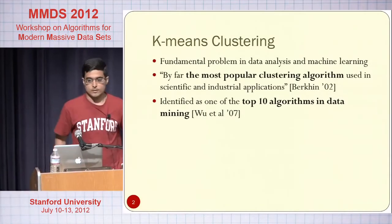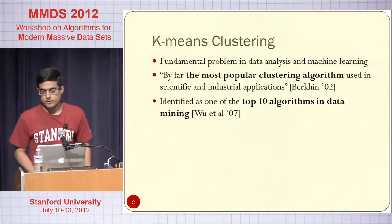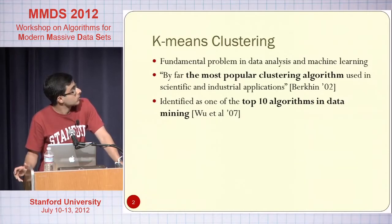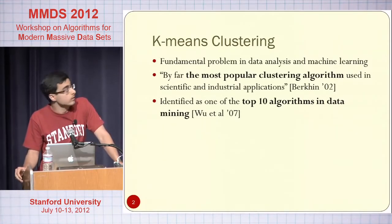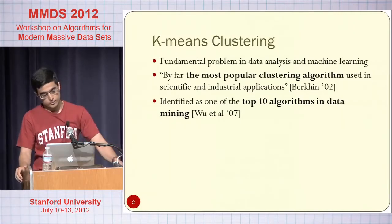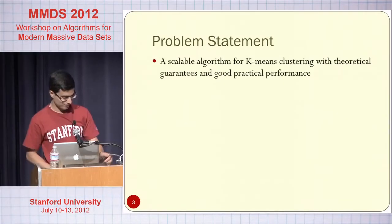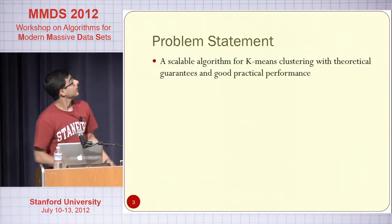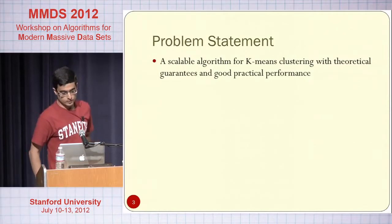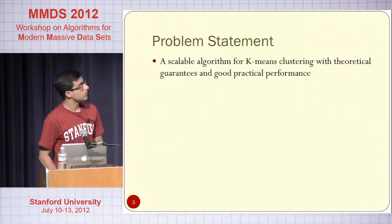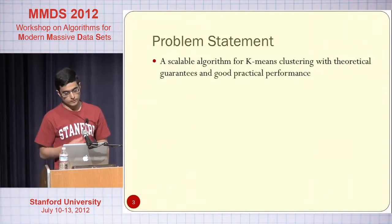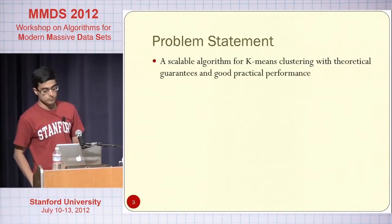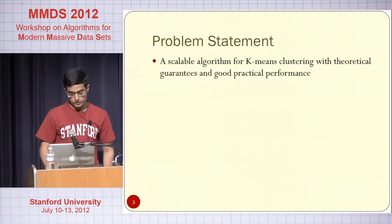K-means clustering is one of the most fundamental problems in machine learning and data analysis. It's the most popular clustering algorithm used in practice, and it's been rated as one of the top 10 algorithms in data mining. The problem we will talk about is designing a scalable algorithm for K-means clustering which has strong theoretical guarantees and also good practical performance. Given the importance of K-means clustering, you would imagine that such an algorithm should have been known for a long time by now. But surprisingly, it actually turns out that that's not the case.